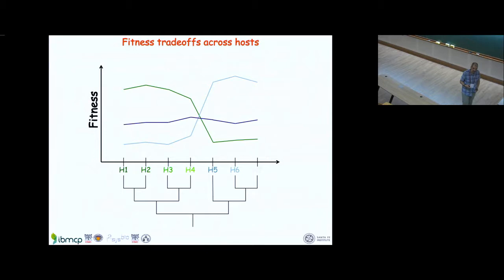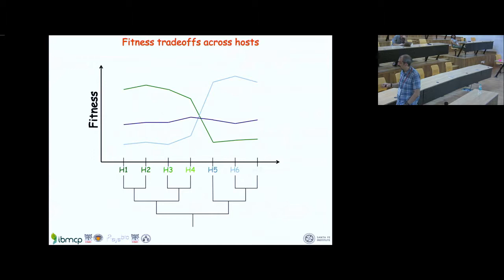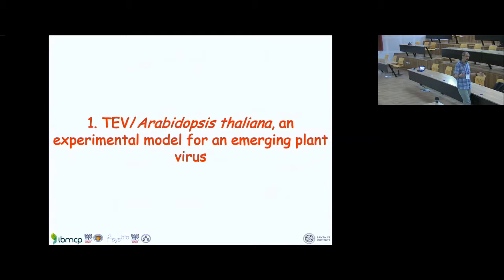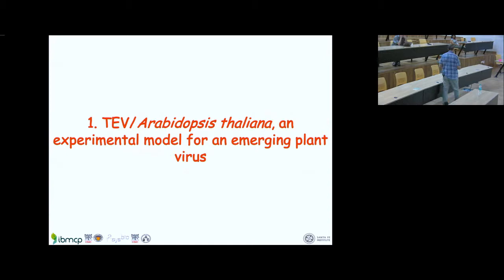This is an interesting problem to address experimentally because there is lots of theory in the literature but very little data specifically addressing these questions. We decided to start a long-term project to study the effect of variability in host susceptibility to infection on the evolution of viruses — how variability in the host species modifies the fitness and virulence of viral populations.